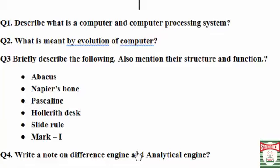Now your home task has started. The first question is: describe what is a computer and a computer processing system. The second question is: what is meant by evolution of computers — write how the computer evolved. The third question is: briefly describe the following, also mentioning their structure and function — you need to write about the Abacus, Napier's Bones, Pascaline, Hollerith Disk, Slide Rule, and Mark One in detail.